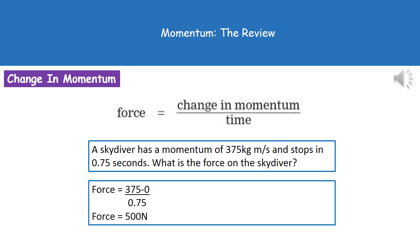To give you an example of the kind of question you might be asked using that then: A skydiver has a momentum of 375 kilograms meters per second and stops in 0.75 seconds. What is the force on the skydiver? So in order to work it out, first of all, we need the change in momentum.